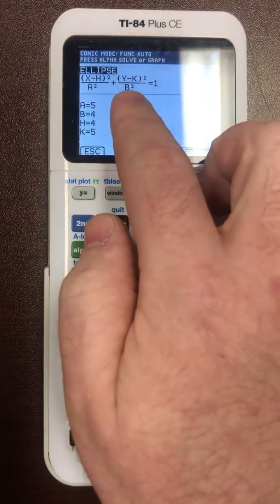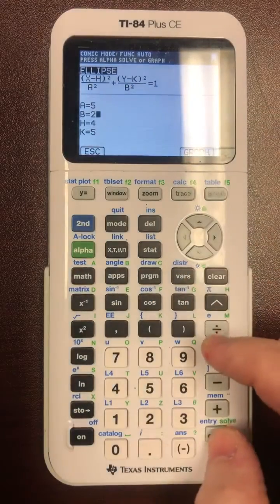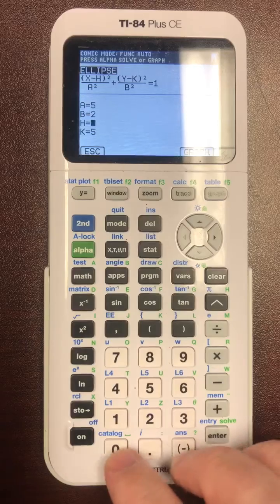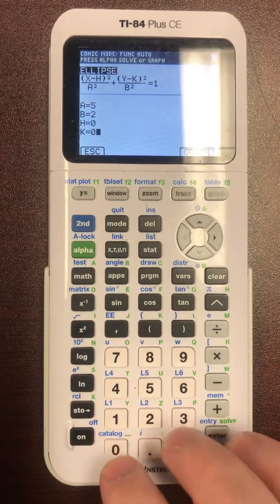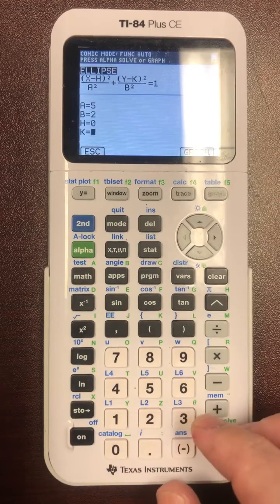Because we have a 4 as our b squared value, that really means b is 2. Because there is no coefficient, it just says x squared and y squared, that means it's centered at 0, 0, the origin.